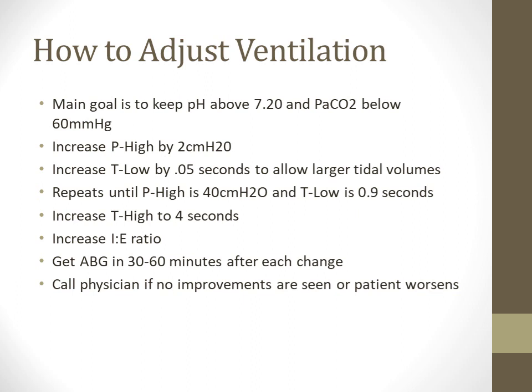If you need to make changes: increase P high by 2 cmH2O, and increase T low by 0.05 seconds to allow for more exhalation, giving a larger tidal volume. Titrate slowly until P high is about 40 and T low is about 0.9, at which point auto-PEEP should be minimal. You can also increase T high to increase the I:E ratio. Get an ABG in about 30 to 60 minutes, and if there's no improvement or the patient worsens, contact the physician.